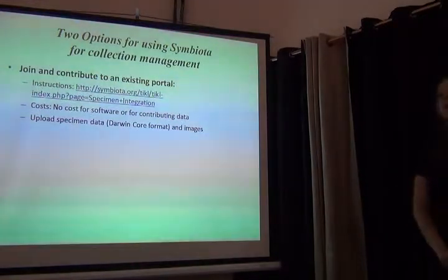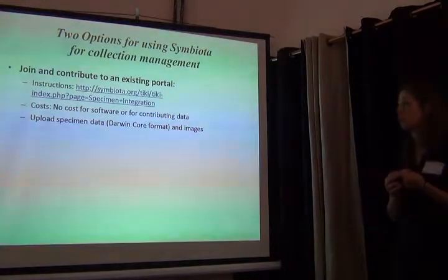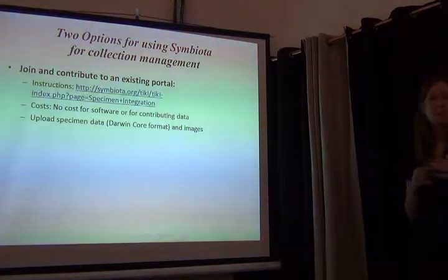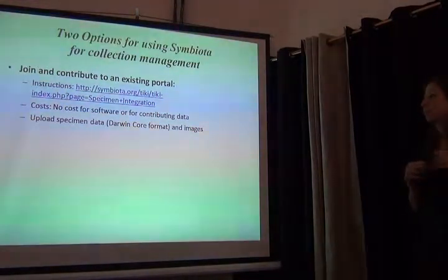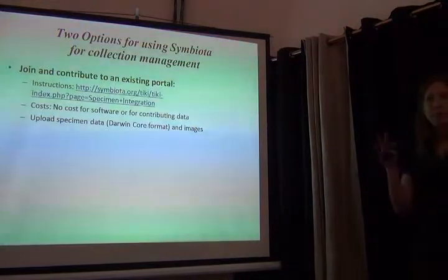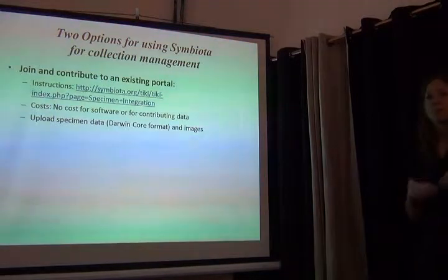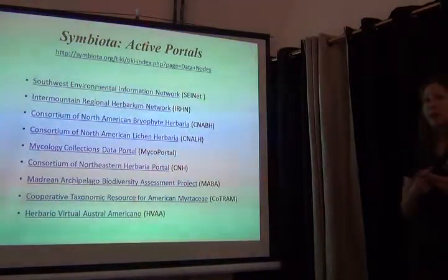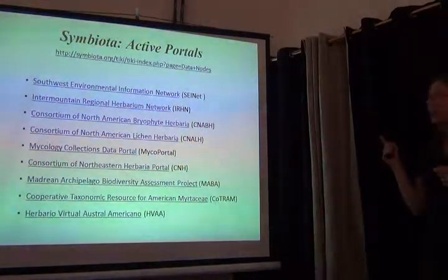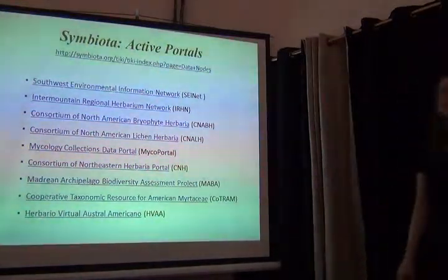If you're considering this as an option, you really have two choices. One is to join an existing portal — the instructions for which are extensive but really easy to follow, and there's no cost to you. You follow the instructions, upload your data in Darwin Core format, supply all the images, and your data is available through a portal. Right now Symbiota has eight active portals, all of which, maybe save for one, are North American-based.